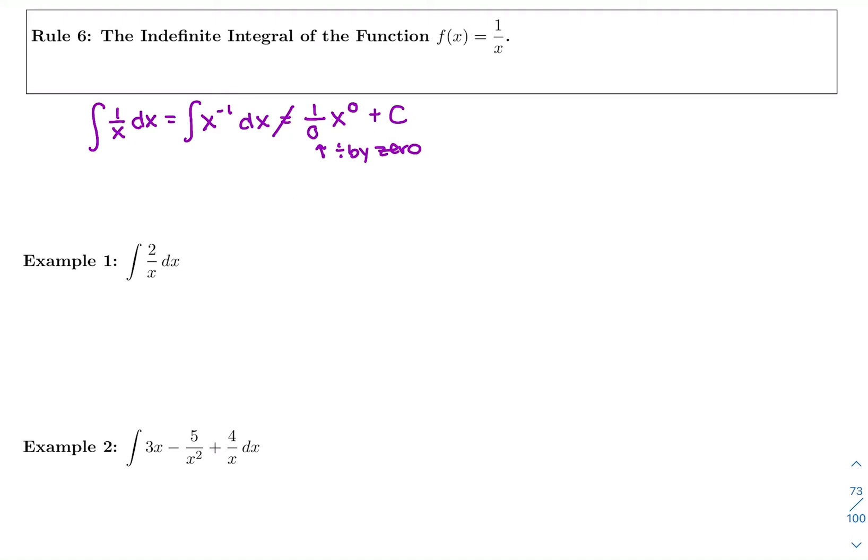So instead, we're going to think about what had a derivative of 1 over x. So what was the original function that had a derivative of 1 over x? Going back to our other way of thinking about how to take an antiderivative. Well, way back with derivatives, we said the derivative of the natural log of x was 1 over x. So we're going to apply that here.